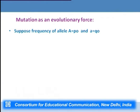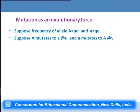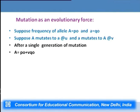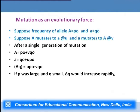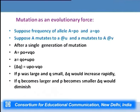Further elaboration: if frequency of allele capital A is P₀, and capital A mutates to small a at rate U while small a mutates back to capital A at rate V, then after a single generation capital A increases from P₀ to P₀ + V·Q₀, and small a becomes Q₀ + U·P₀. The change in allelic frequency of small a (delta Q) is U·P₀ − V·Q₀. If P is large and Q is small, delta Q increases rapidly; as Q grows and P shrinks, delta Q diminishes.